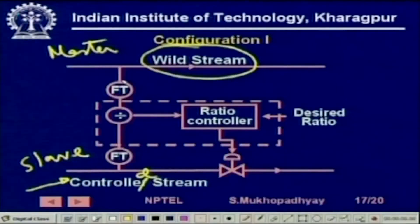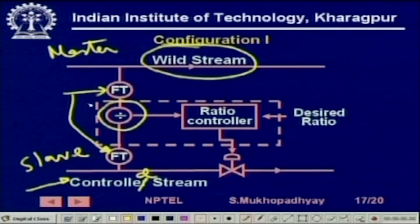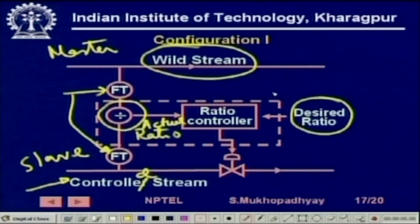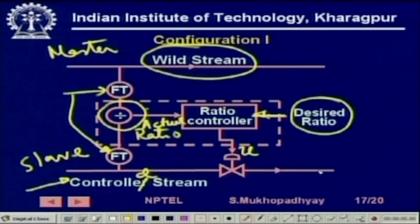Obviously, to be able to reach that we have to measure the streams, so we are putting two flow transmitters which actually measure the volumetric flow rates. Here we are dividing them to get the ratio — this is the actual ratio — and this is the desired ratio. This is the ratio controller, which gives its input to the valve so that the controlled stream is increased or decreased such that this ratio is maintained.